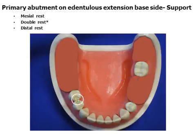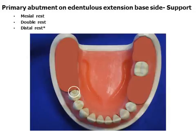Rest placement on the distal extension side is normally on the tooth adjacent to the edentulous space. Several options are available, but the mesial aspect of the tooth is preferred due to mechanical considerations. Mounted diagnostic casts are helpful in planning rest placement. Avoidance of habitual occlusal contact is desirable.